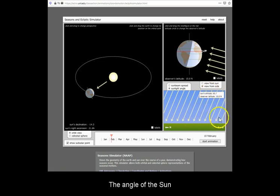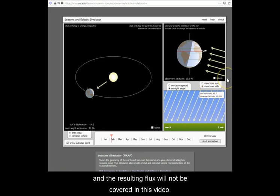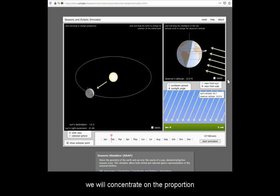The angle of the Sun and the resulting flux will not be covered in this video. Rather, we will concentrate on the proportion of day side to night side at each latitude, which will give us the proportion of daylight hours and nighttime hours on that particular date.